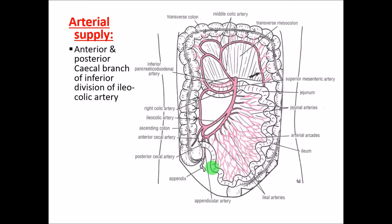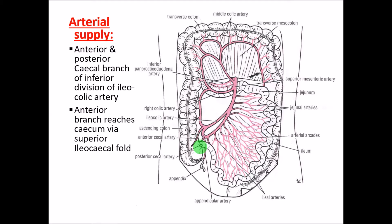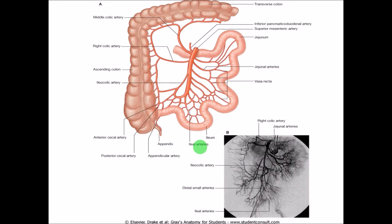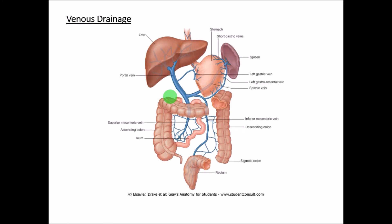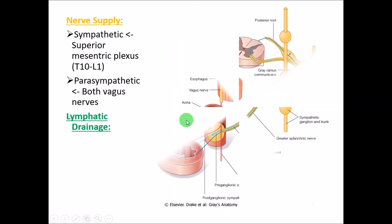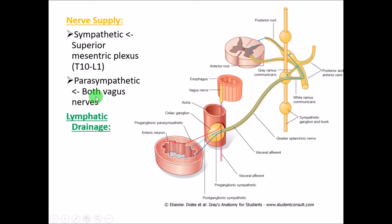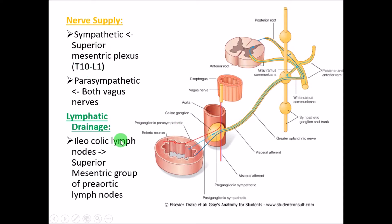Arterial supply: the cecum is supplied by the anterior and posterior cecal arteries, branches of the ileocolic artery. Venous drainage is by corresponding veins draining into the superior mesenteric vein. Nerve supply: parasympathetic is by the vagus and sympathetic is by the superior mesenteric plexus from T10 to L1. Lymphatic drainage is into the ileocolic lymph nodes, which finally drain into the superior mesenteric and pre- and para-aortic groups of lymph nodes.